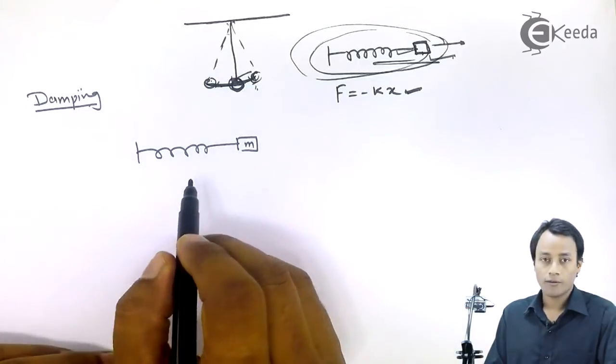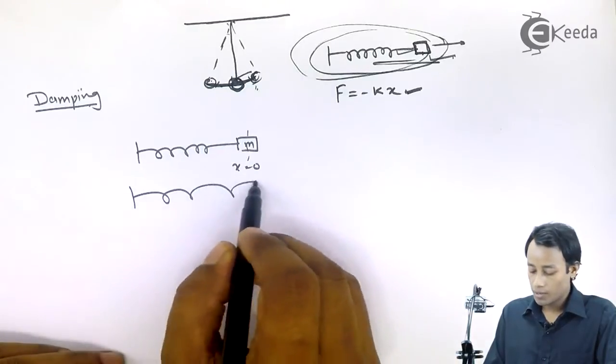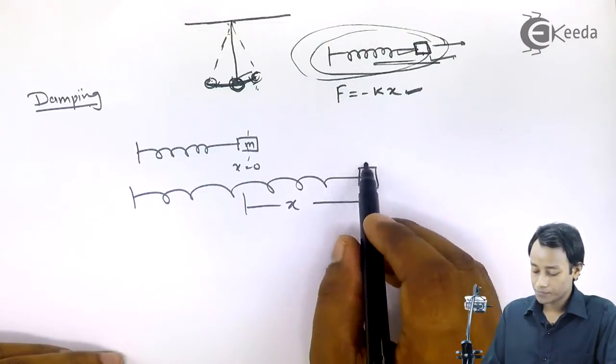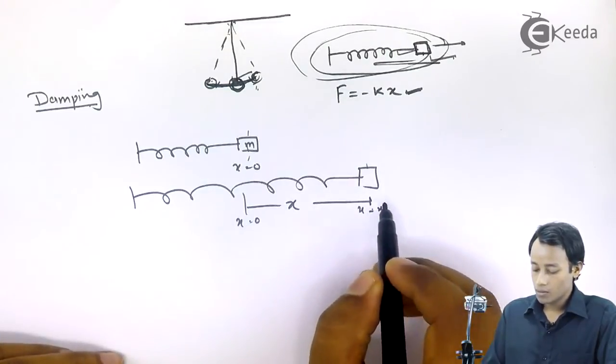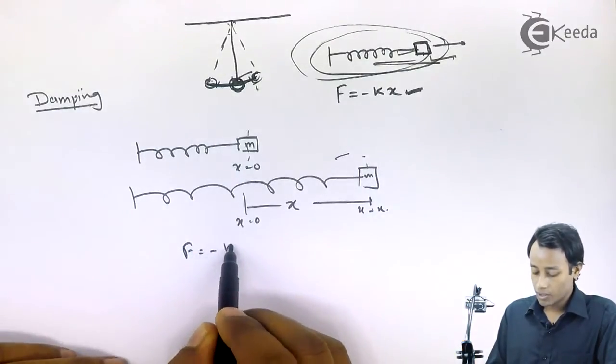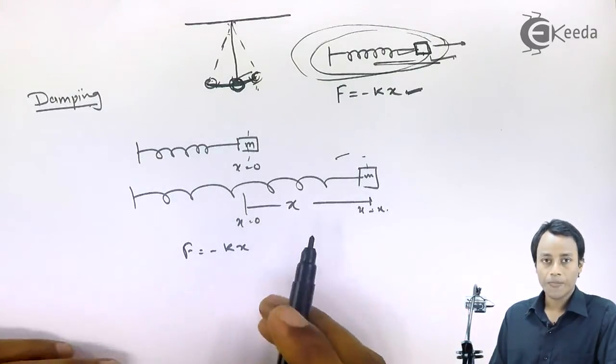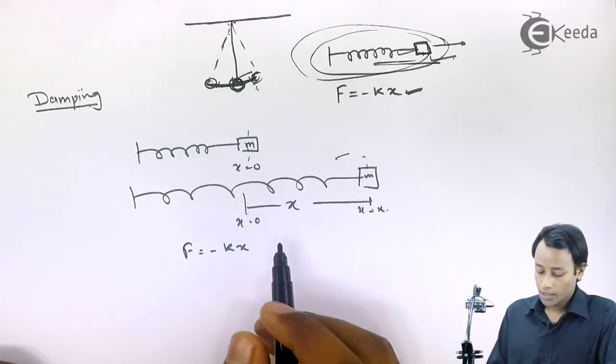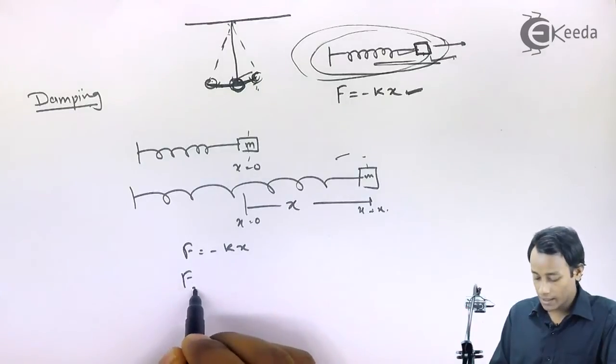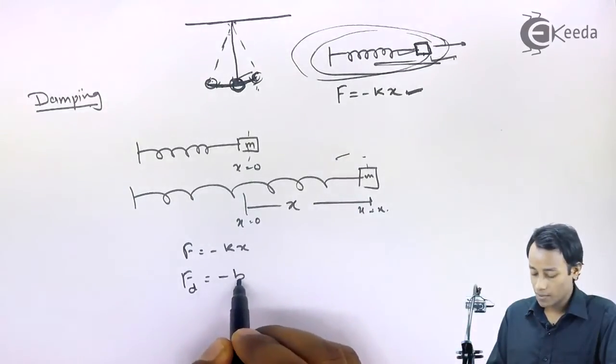If you pull it, say at a certain distance x, the first force that will act on the mass, that will be the restoring force minus kx. At the same time, because of the resistance in the environment, there will be a damping force. And that damping force, I write as Fd, is proportional to the velocity of this mass and is given as minus Bv.